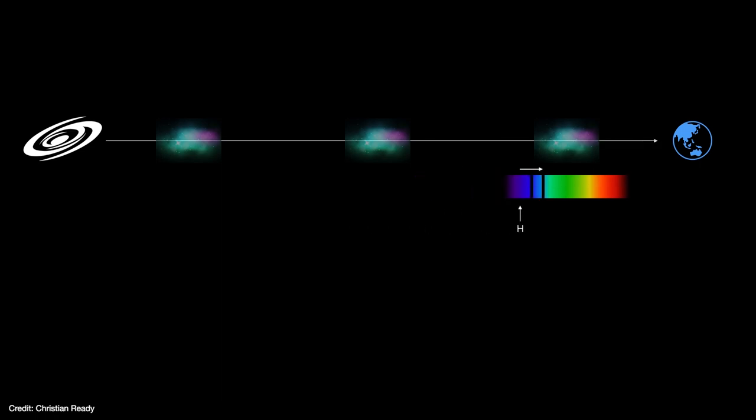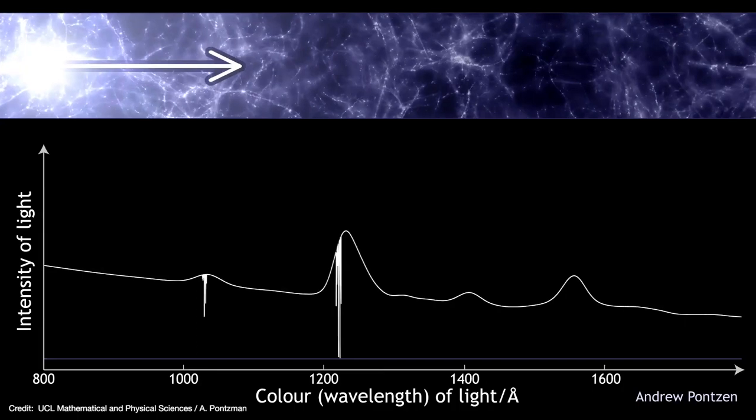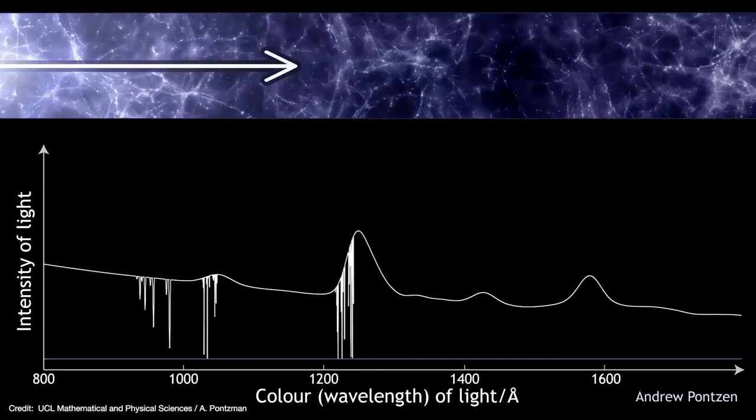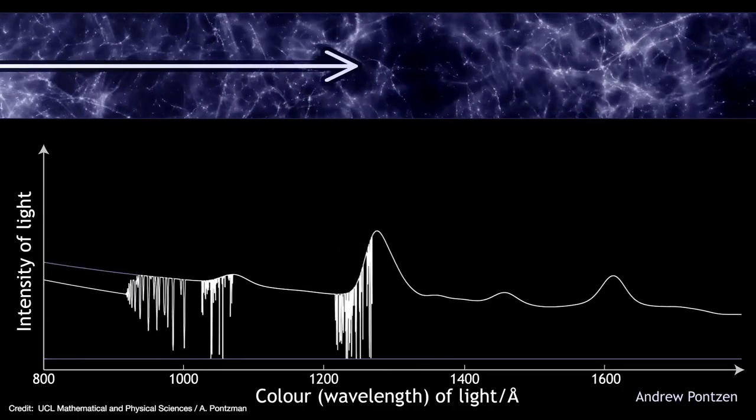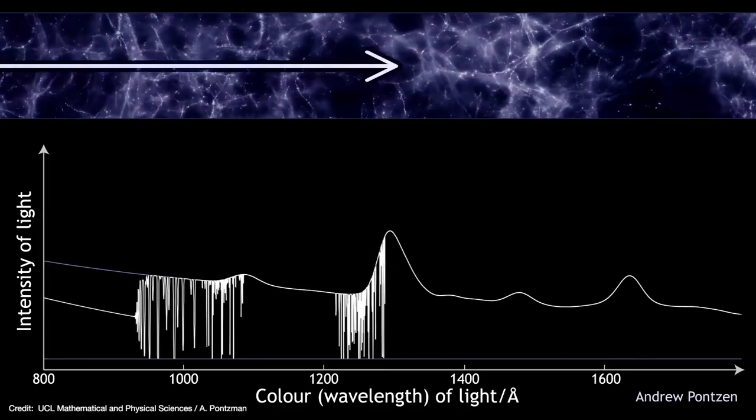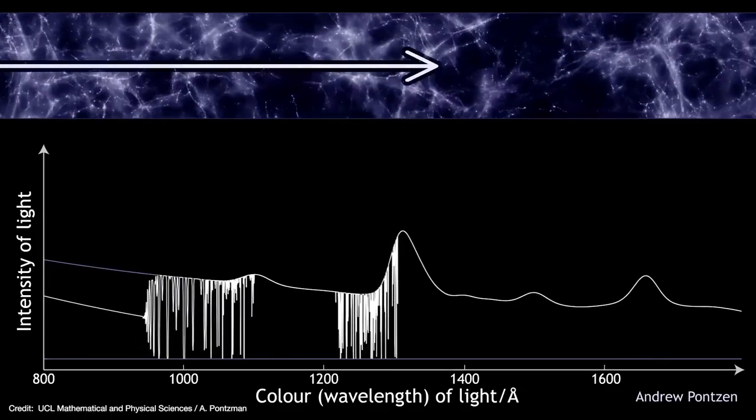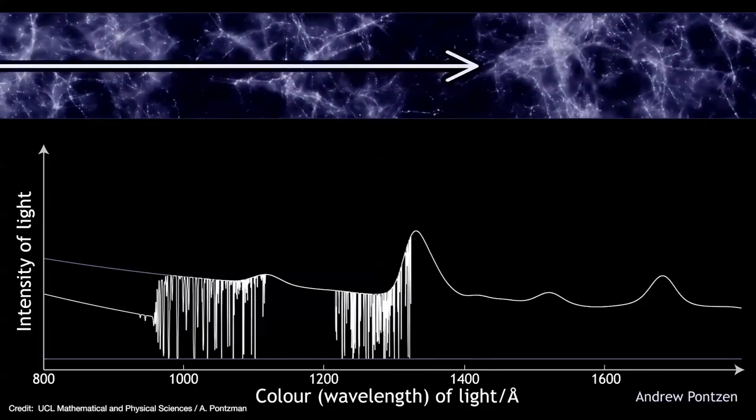By the time the light reaches another cloud, the first two lines have shifted further into the red and a new absorption line is created behind them. The process keeps repeating until over time the spectrum starts to build up a forest of repeating hydrogen absorption lines. The higher the galaxy's redshift, the more of these clouds its light had to pass through and the thicker the forest becomes.